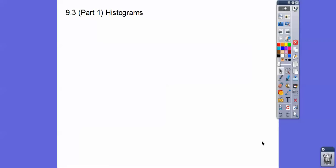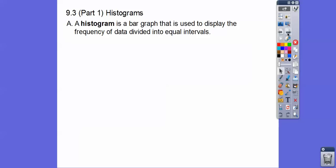Alright, you guys, this lesson is the first part on histograms. The next one we'll do box and whisker plots. So a histogram is just a fancy bar graph where the bars are all squished together. There's no spaces in between them. So it's a bar graph that's used to display the frequency of data divided into equal intervals. So we'll do a few of them here.